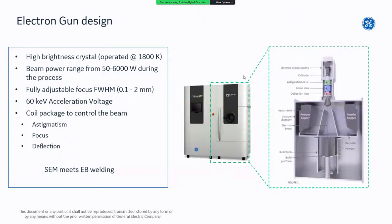EBM is very much like laser-based powder bed processes — the major difference is that instead of a laser beam as an energy source, we use an electron beam. We spread the powder out as laser-based processes do, but use an electron beam to melt the powder. The electron beam is generated from a high-brightness crystal, with beam powers ranging from 50 to 6,000 watts, compared to laser-based systems that typically use single lasers of up to one kilowatt.